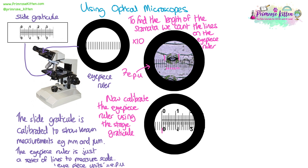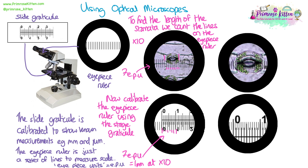Now I'll have taken away the microscope slide with the leaf tissue, replaced it with the graticule slide, and laid the eyepiece ruler so they line up in a straight line over the ruler on the slide graticule. I now need to see how many eyepiece units is equivalent to a known length on the slide graticule. Here we can see that my seven eyepiece units is the equivalent of one millimetre.